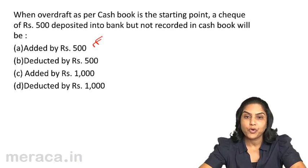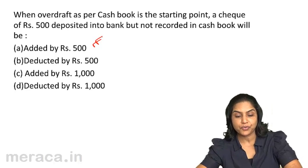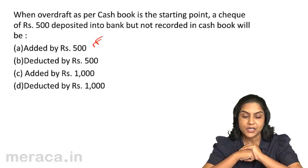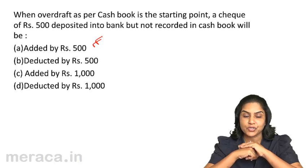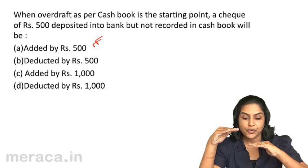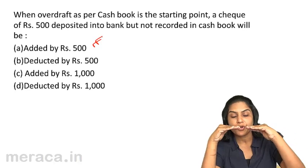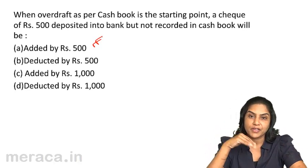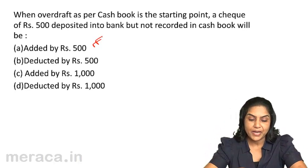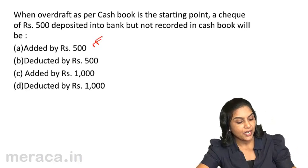If we want to think of it logically for an overdraft: with overdraft as per pass book, when a check is deposited, the overdraft is reduced. So the pass book balance overdraft decreases, and therefore we will add. Among those rupees 500, we will record the change in the cash book.